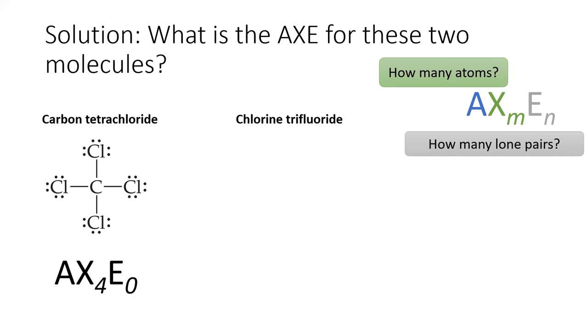Moving on to chlorine trifluoride, in order to get the AXE notation for this molecule, you have to translate the name into a Lewis structure. There's no other way to do it. From the Lewis structure, we see the central atom is making three bonds and has two lone pairs. Therefore, this molecule is AX3E2.